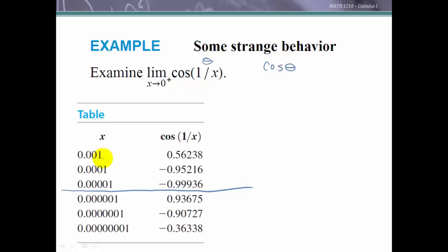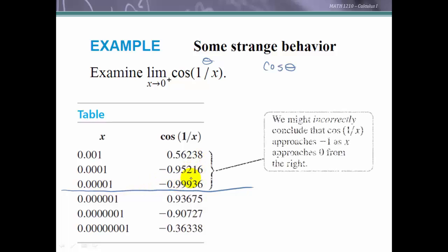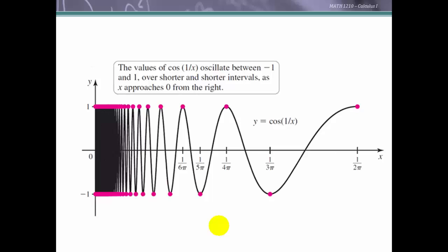This is an example to show you that if you didn't look at enough values numerically, you may be deceived. What if you decided this is close enough to 0 and it appears to be approaching -1, and you might incorrectly conclude the limit is -1? But as we keep going, one value is close to 1, the next close to -1, another about -1/3. This is actually all over the place between -1 and 1. As you get closer and closer to 0, this oscillates over shorter and shorter intervals, faster and faster, but it never gets closer to one specific value. It continues to oscillate between -1 and 1. Therefore, the limit does not exist.